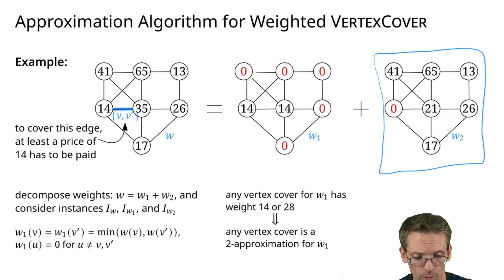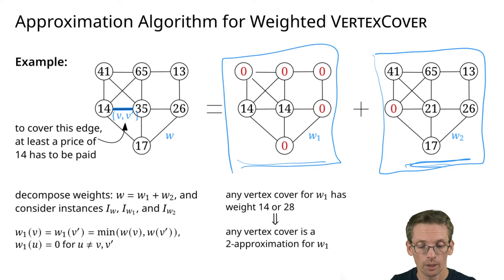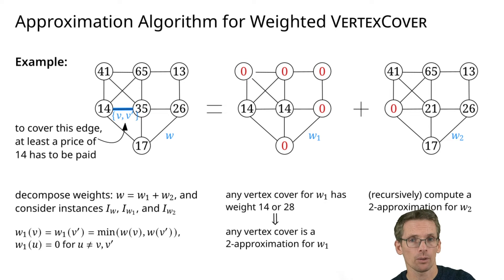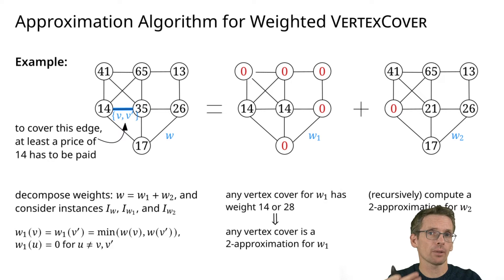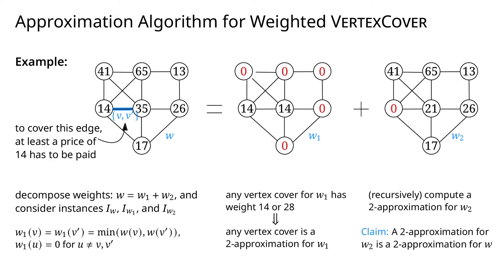The idea is: if we can get a 2-approximation for the w2 instance, we take that vertex cover and use it for w1 as well, because any vertex cover for w1 is already a 2-approximation. So a 2-approximation for w2 also gives a 2-approximation for w1, and overall we get a 2-approximation. To get a 2-approximation for w2, we recurse — pick another edge and repeat.